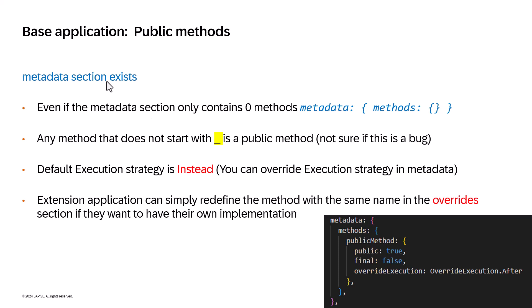If a metadata section exists, even if it contains zero methods, the behavior changes — anything that does not start with an underscore is a public method, and the default strategy is 'instead'. You can override the execution strategy in the metadata section. From the extension application, provide the same name in the override section to have your own implementation.